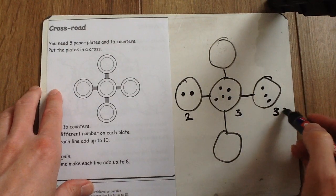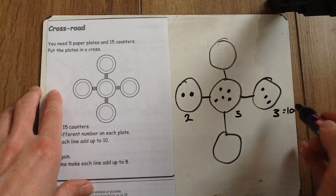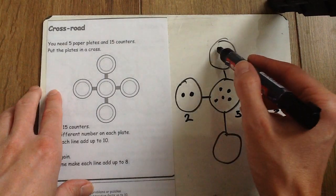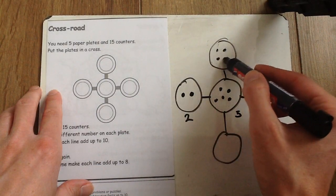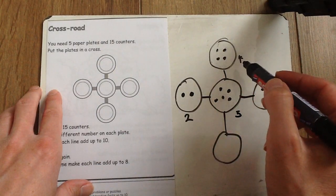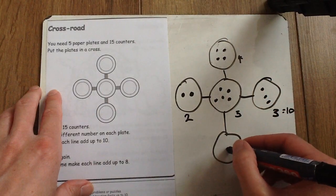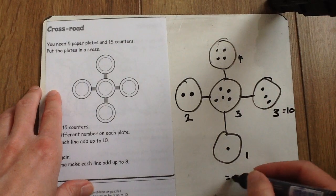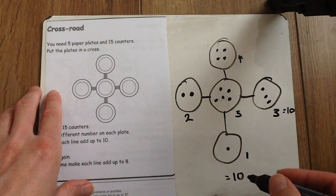That gives you a total of 10. Now we've already got 5 in the middle so we need to put 4 counters up at the top and just 1 counter at the bottom. Awesome. So now 4 plus 5 plus 1 also equals 10. There we go.